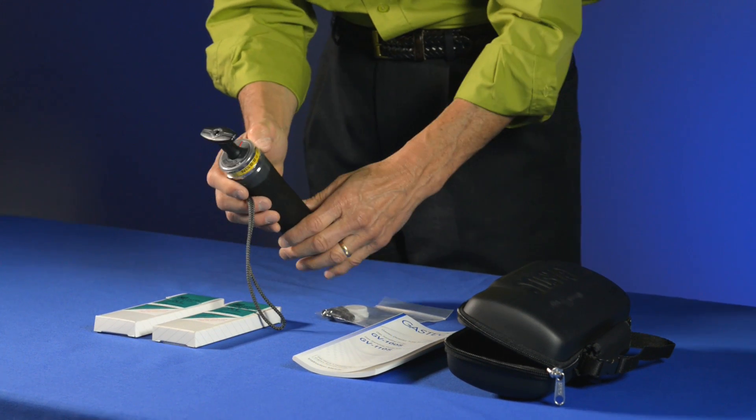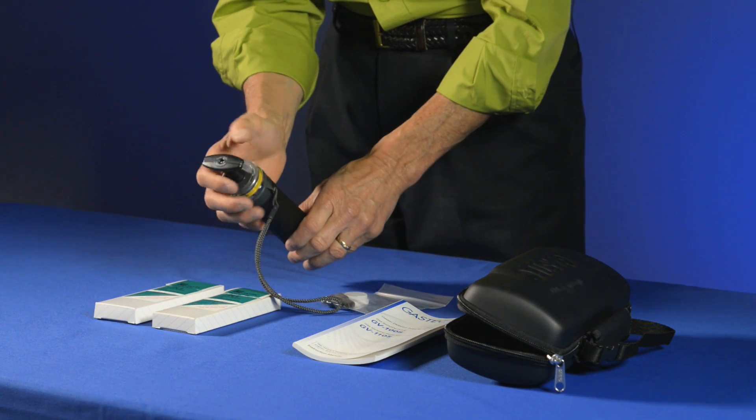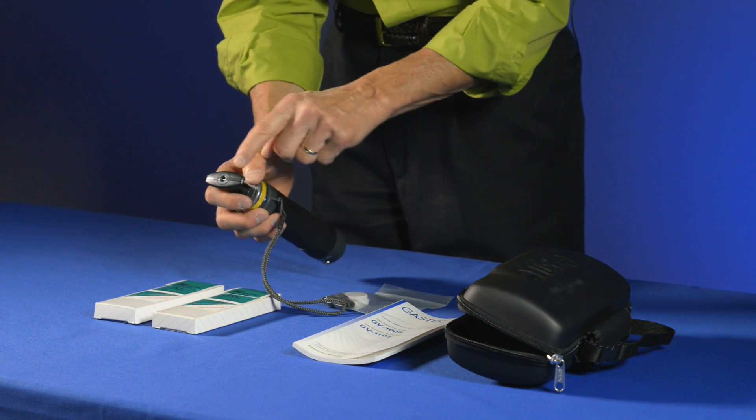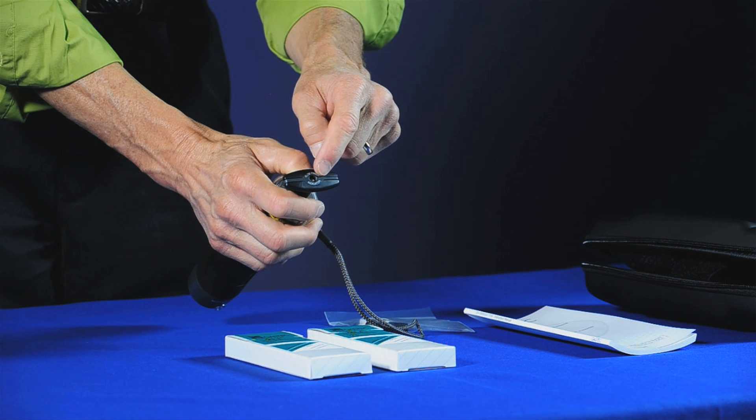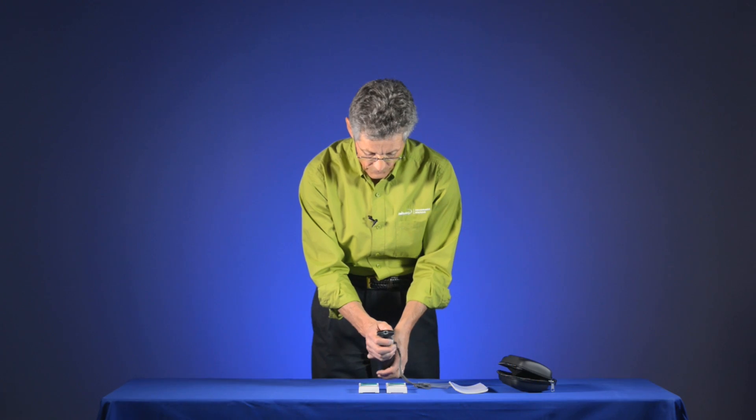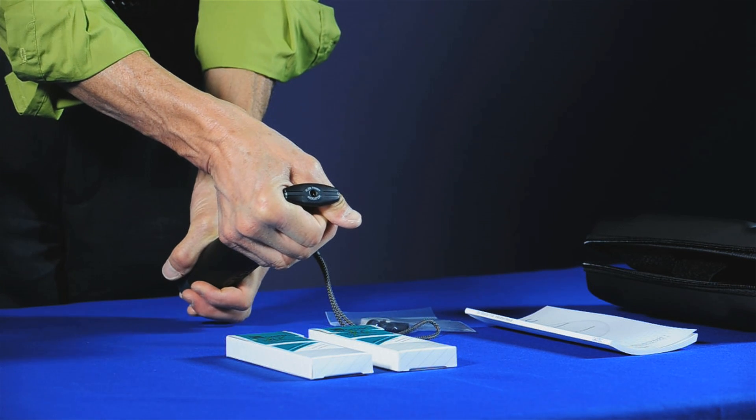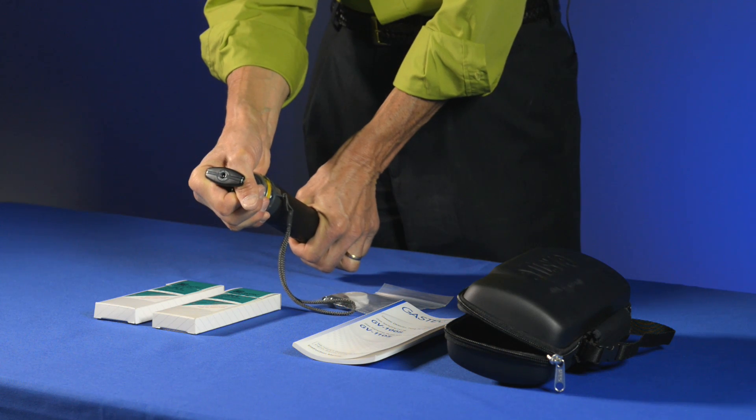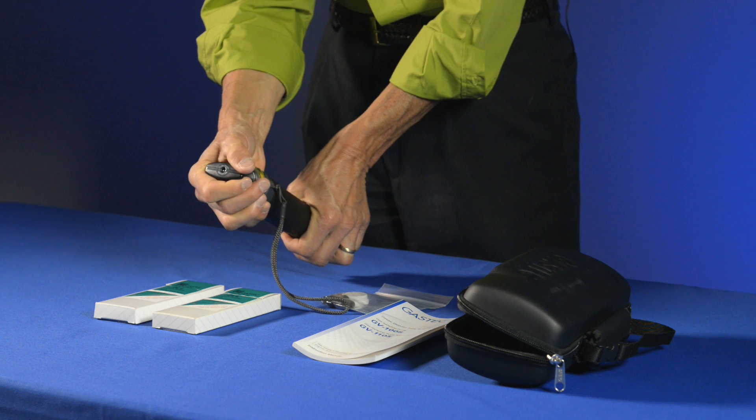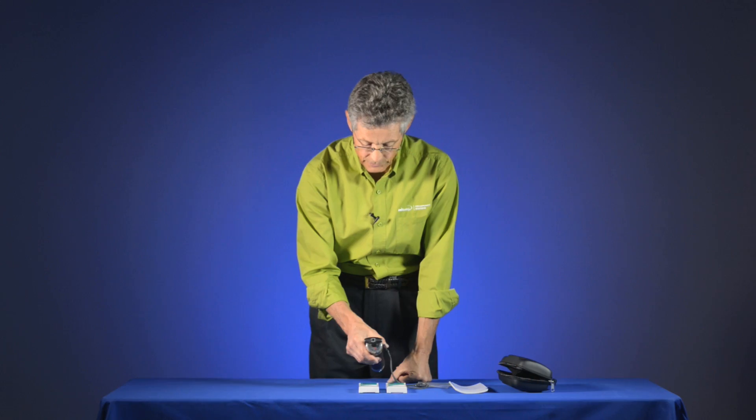And then the other thing that you have on the GasTech Pump is a flow finish indicator. So at the end of the handle you'll see a bright white dot. When I put a tube in and I draw a sample, you'll notice that white dot disappears. And then once the sample is completed, the white dot reappears and the pump is ready to go.